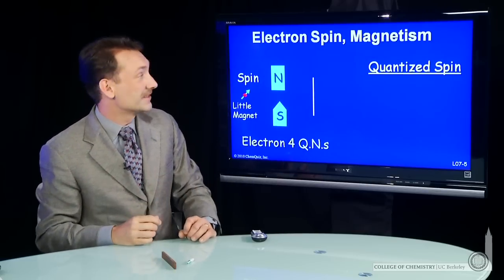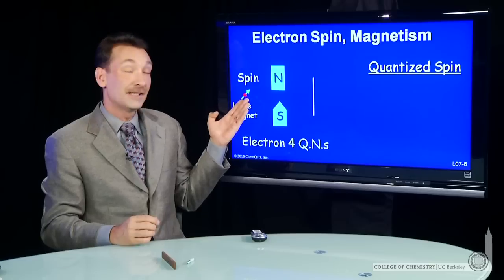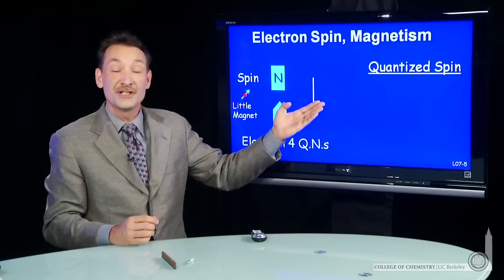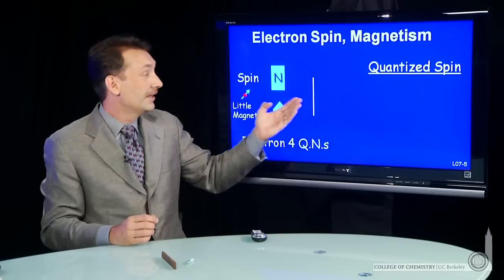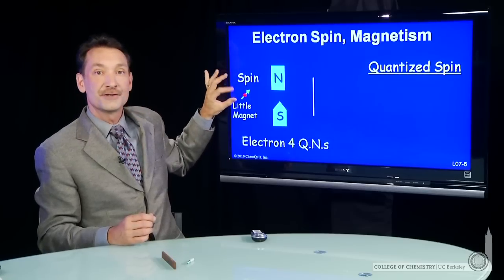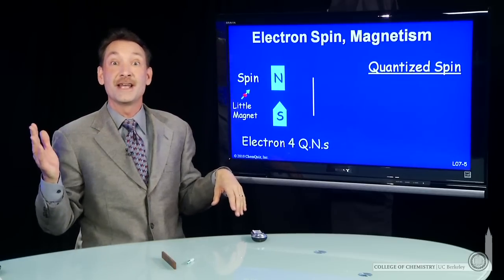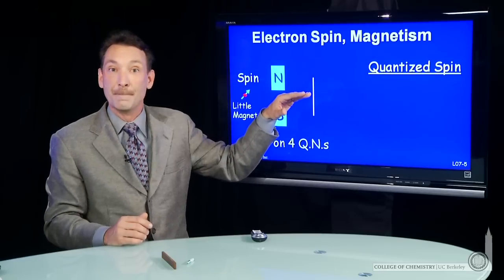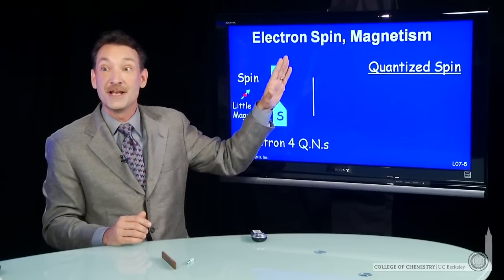Let's look at an experiment that manifests that. If you take electrons and you send them through an inhomogeneous magnetic field, they will separate based on their spin. Out here, where there's no magnetic field, they could either be spin up or spin down. As they pass through the magnetic field, that will sort them based on whether they're spin up or spin down.